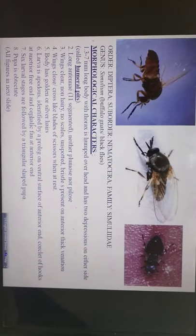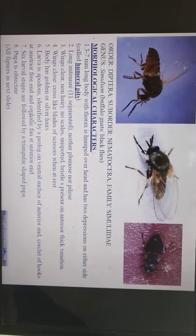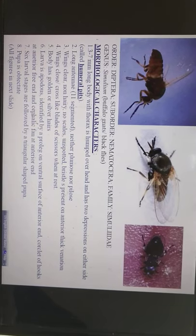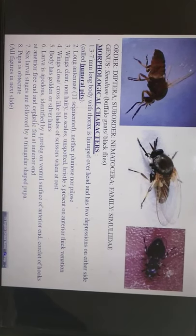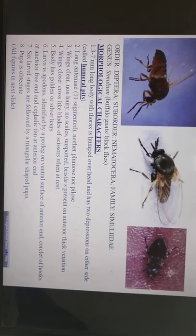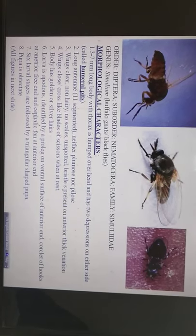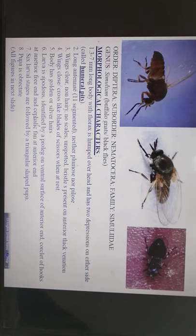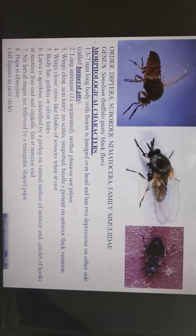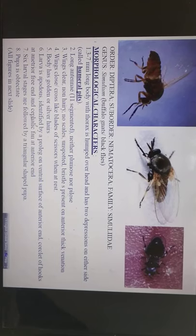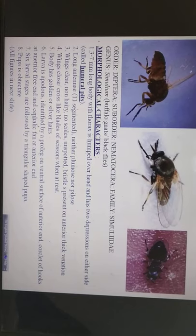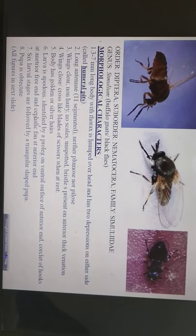The nematoceran fly is very small in size — three millimeters, and maximum they may go up to seven millimeters, but average size is generally about four to five millimeters. Then comes Brachycera: 'brachy' means short. The antennae are short — only three segments — and on the last segment you will find annulations, small bead-like structures called annulae. These flies are very large and robust.